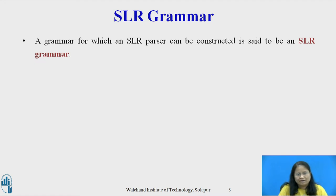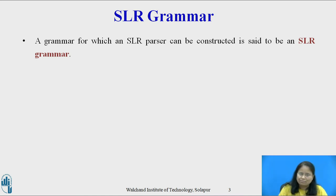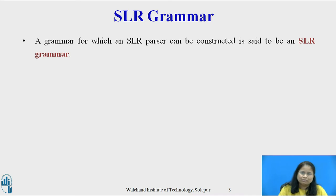Simple LR, or in short SLR, is the easiest to implement. We refer the parsing table constructed by this method as an SLR table, and an LR parser using the SLR parsing table as an SLR parser. A grammar for which an SLR parser can be constructed is said to be an SLR grammar.